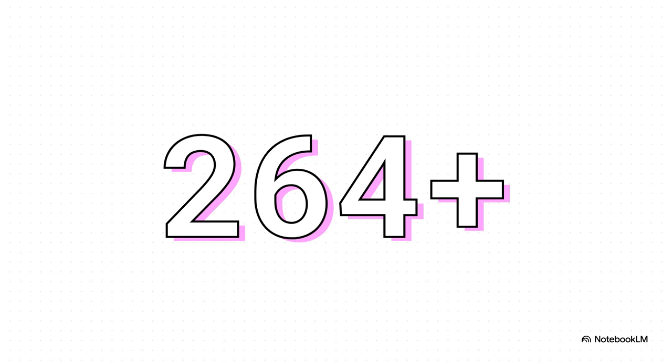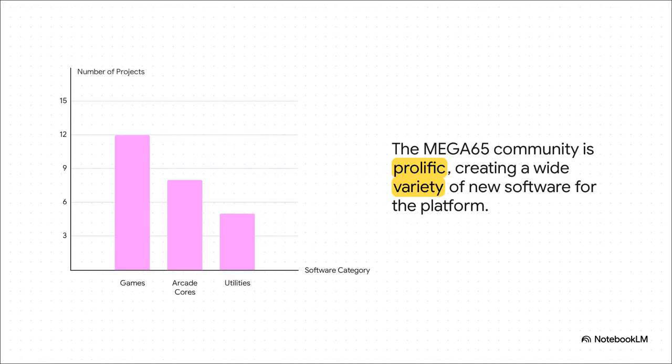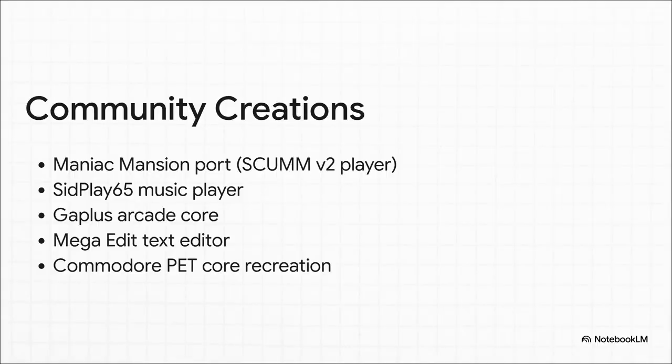And we're not just talking about one type of software, either. This chart gives you a feel for the variety. Games are a huge category, but people are also building really powerful utilities and, this is the really wild part, something called arcade cores, which are hardware-perfect recreations of classic arcade machines. There's a full port of the classic adventure game Maniac Mansion, a music player for those legendary C64 tunes, a powerful text editor, an arcade-perfect version of the game Gapless, and they've even completely recreated a much older computer, the Commodore PET — all built by the community.